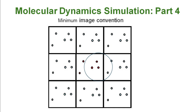For each atom, there is a neighbor list at a particular time. The atoms present within the cutoff range are the neighbors of that atom. But during simulation, atoms move and change their positions, so their neighbors also change. Therefore, we have to update the neighbor list periodically because neighbors change with each time step. A Verlet cutoff scheme is used to prepare and update this neighbor list.